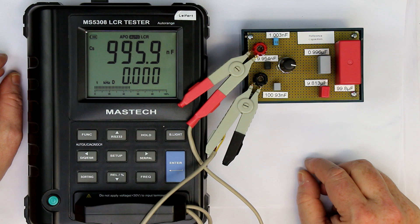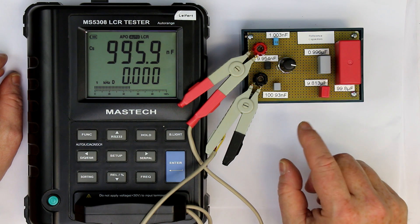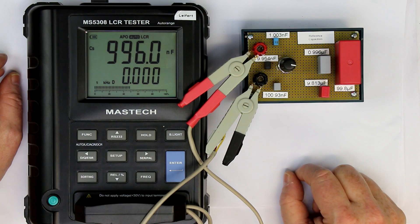Next is one microfarad, and we get 0.996 as you can see. Half a percent off.